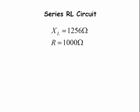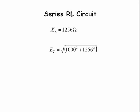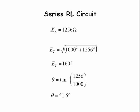The lengths of the two sides of our right triangle are 1000 and 1256. The hypotenuse equals the square root of the sum of these two squares. This gives us 1605 volts. The angle between the two voltages is the arc tan of the two voltages. The angle theta is 51.5 degrees.